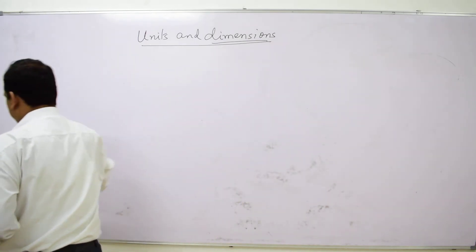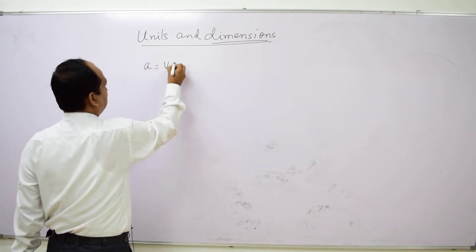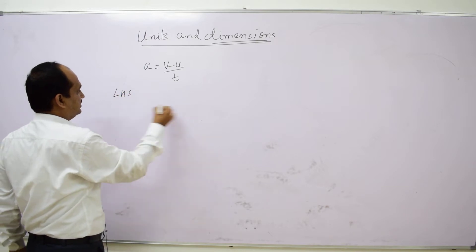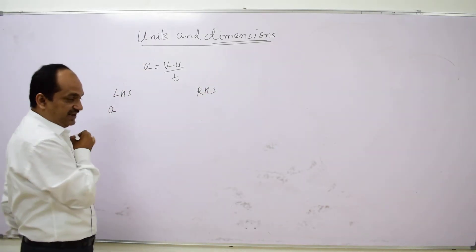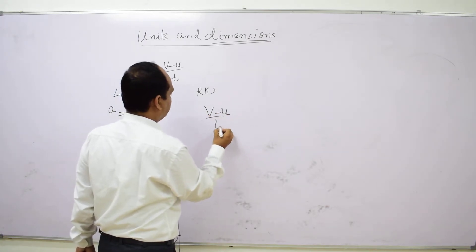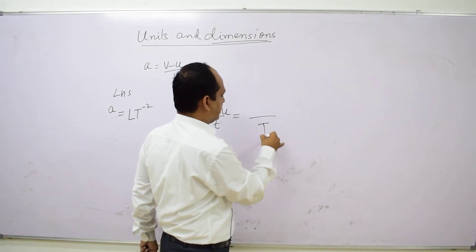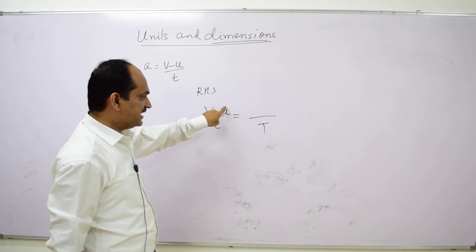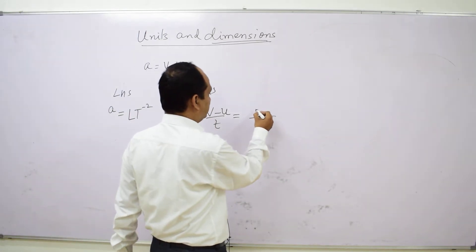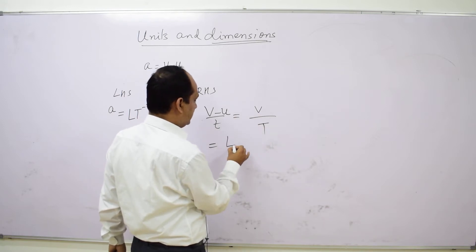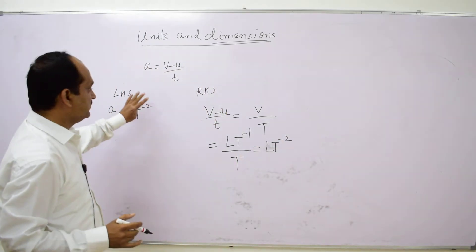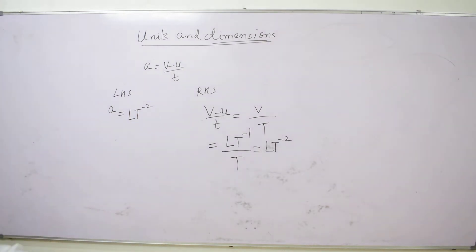Second example: A = (V - U) / T. The LHS dimension of acceleration is L T minus 2. On the RHS, subtracting velocity from velocity gives velocity, so the numerator has dimension L T minus 1, divided by T gives L T minus 2. Both sides match, so the formula is dimensionally correct.